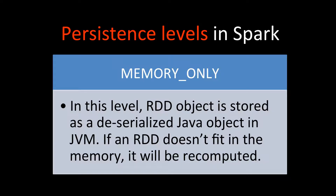The first is the memory only persistence level. In this, an RDD object is stored as a deserialized Java object in JVM. If the RDD doesn't fit in memory, then we have to recompute it — otherwise it is stored only in memory. Since it's in memory, we can keep it as deserialized because it's not being transferred.